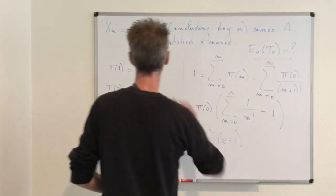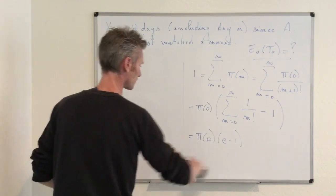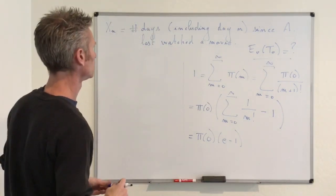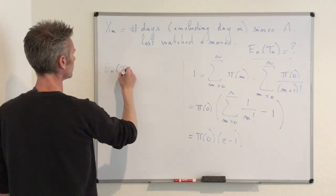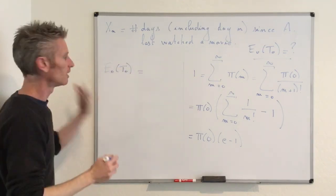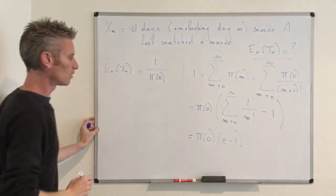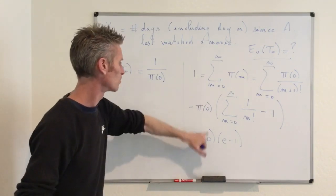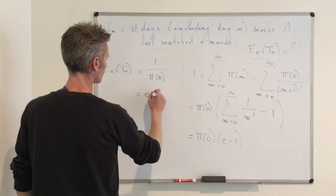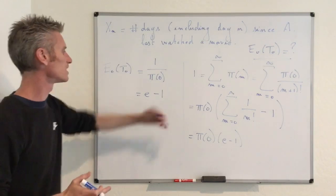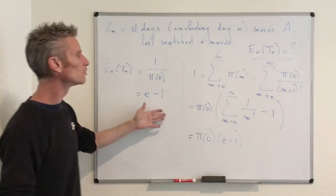We can conclude that the time between two consecutive movies — which is equal to the mean recurrence time E_0[T_0] — by the theory we saw last time equals 1 over pi_0. Here pi_0 equals 1 over (e minus 1), so 1 over pi_0 is equal to e minus 1, which is about 2.7 minus 1, so about 1.7 days on average. That concludes our proof.